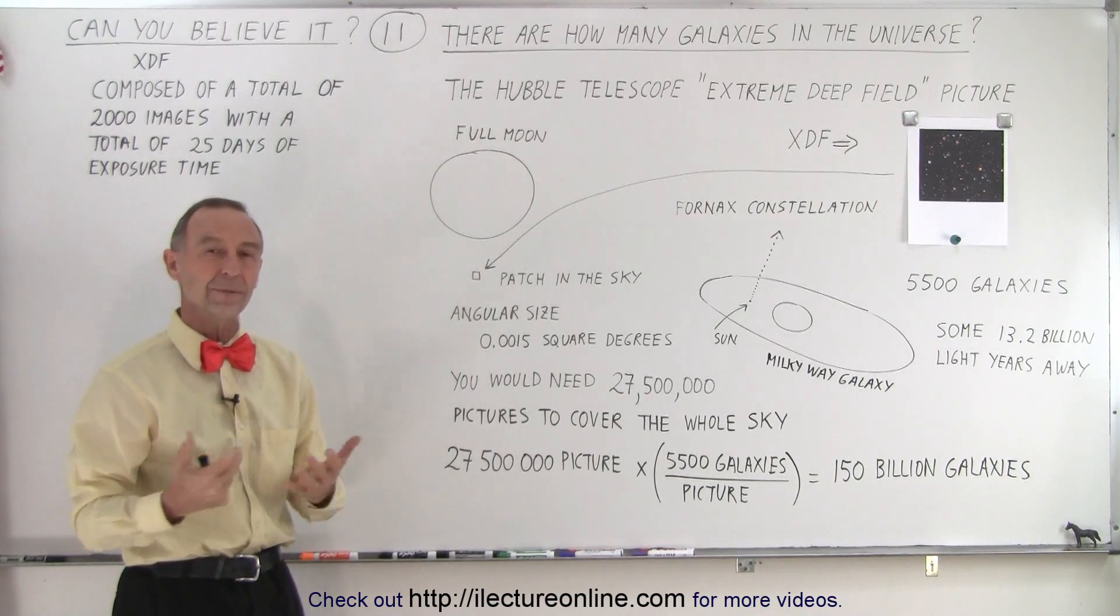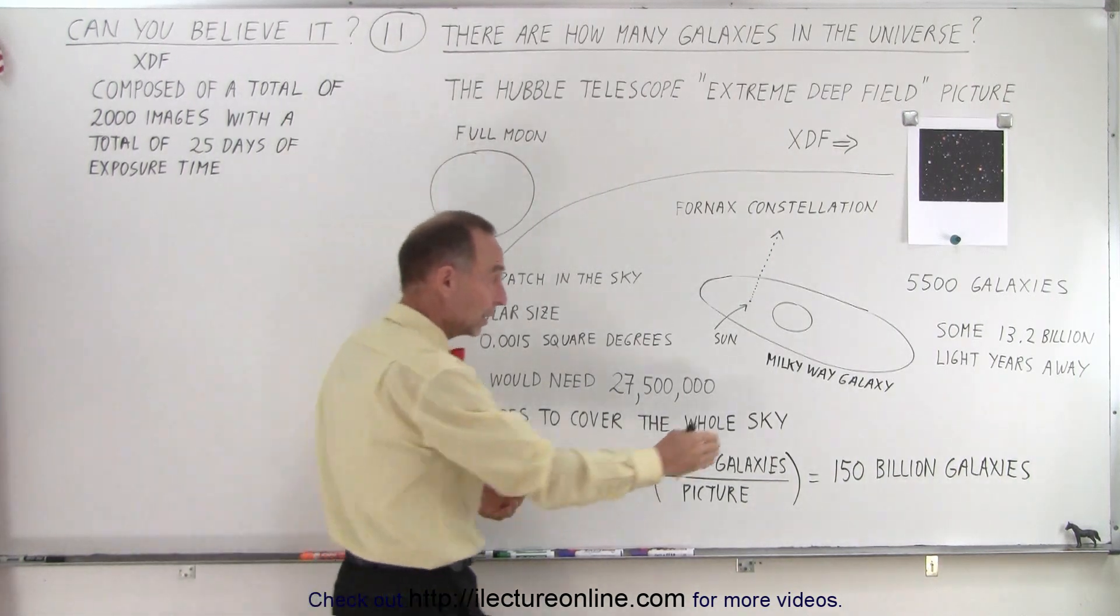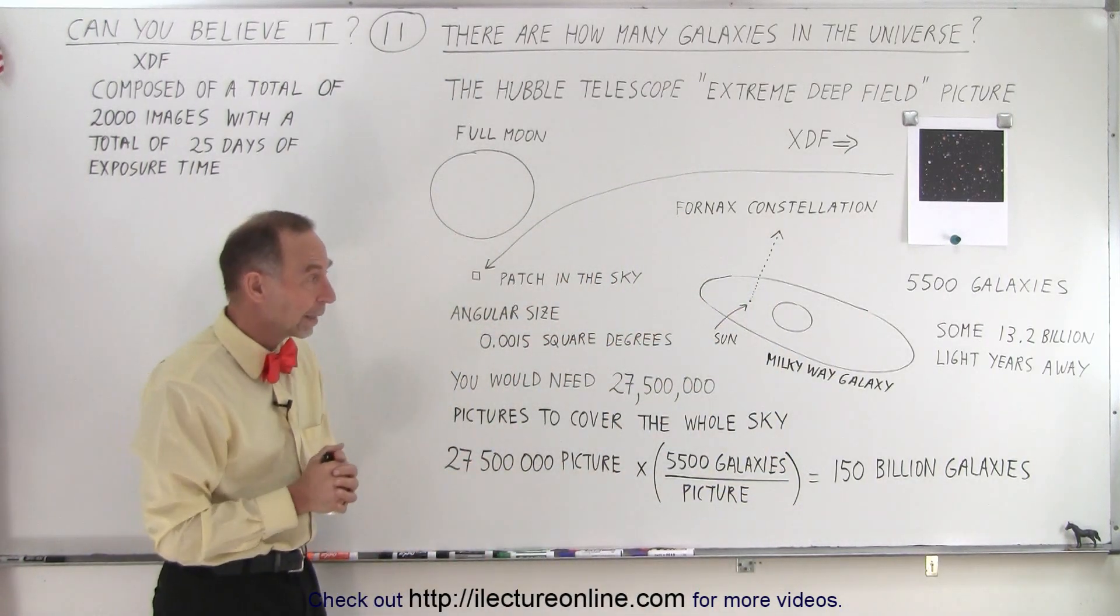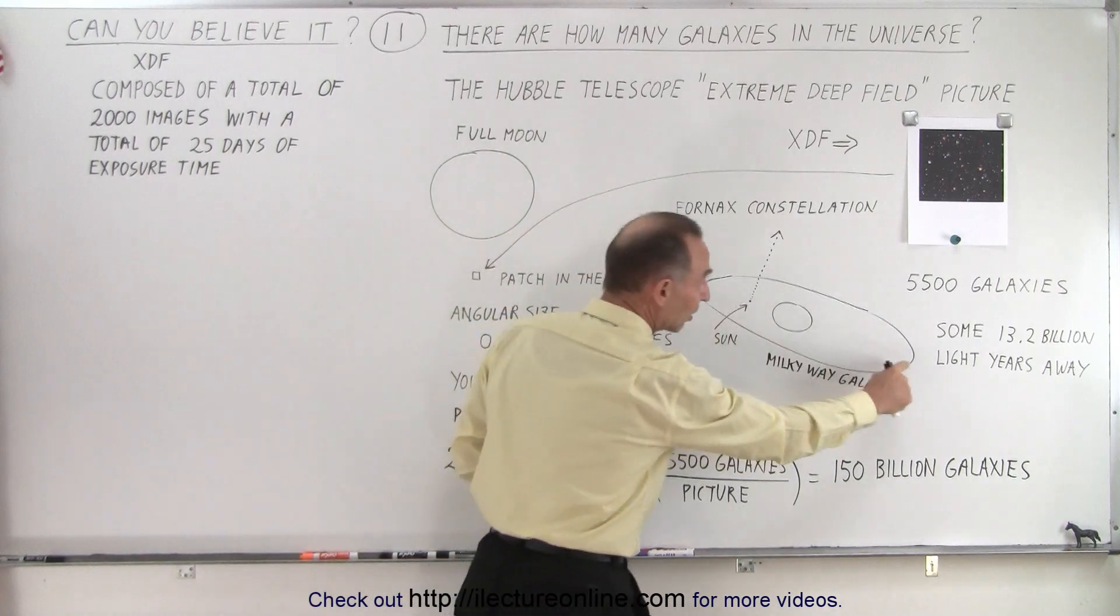Wow. And how big is a galaxy? Well, the one that we live in, the Milky Way galaxy, contains about a quarter of a trillion stars and it's about 100,000 light years across.